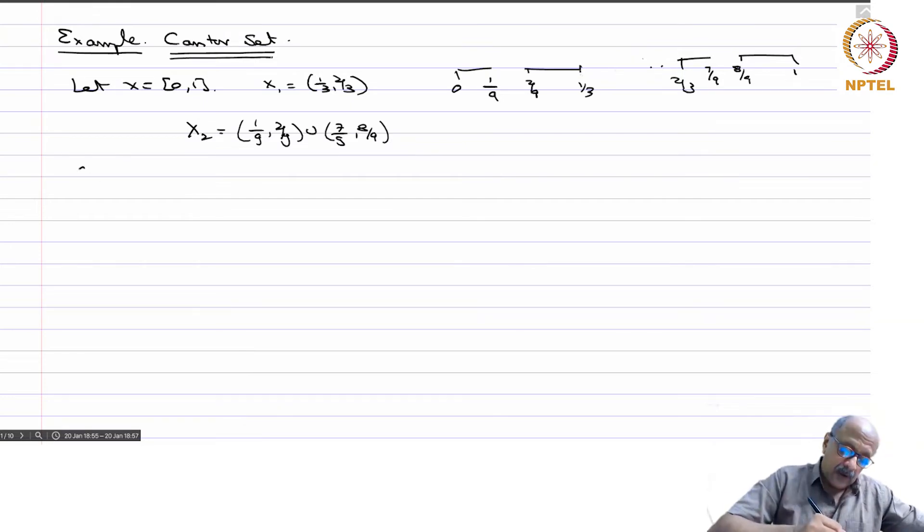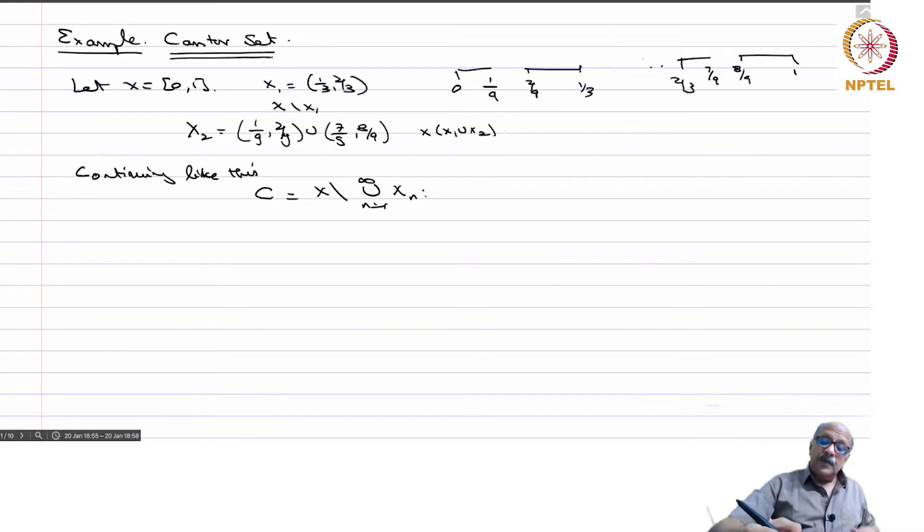Now I continue like this. This gives you first we had x minus x1, then you had x minus x1 union x2, and so on. Continuing like this, we define C to be x minus union n equals 1 to infinity xn. xn is nothing but the middle third of the previous remaining thing here. C is called the Cantor set.